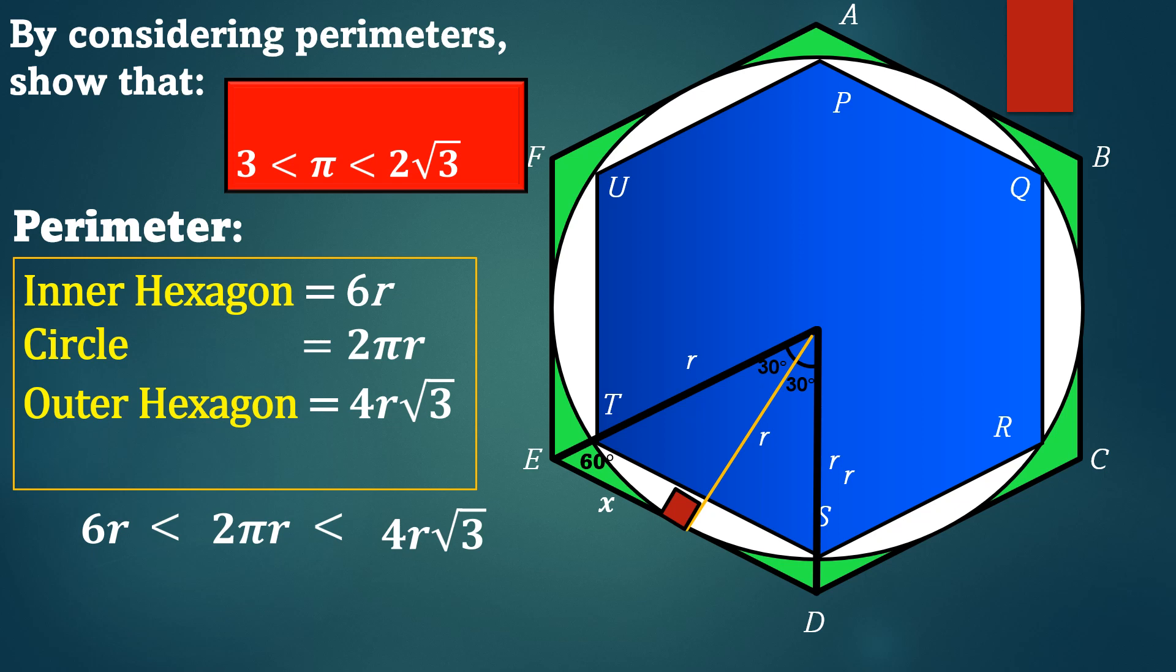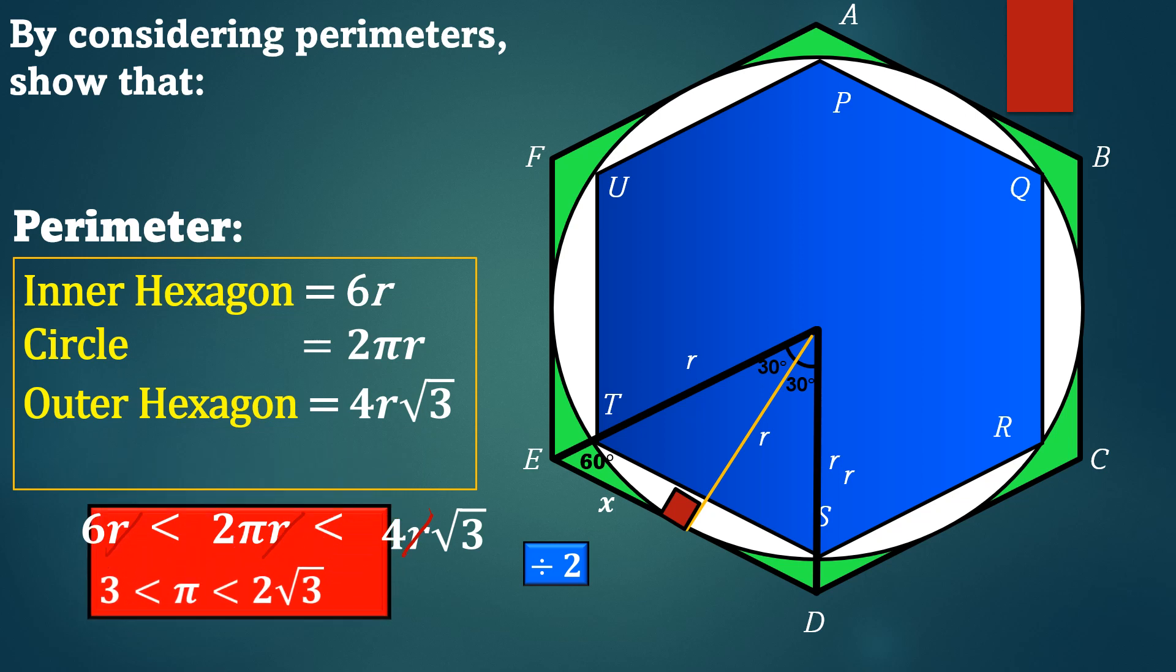If we divide the inequality by r, notice the r's will cancel out. If we then divide the inequality by 2, finally, we have shown that π is greater than 3, it is also less than 2 root 3. How fun was that?